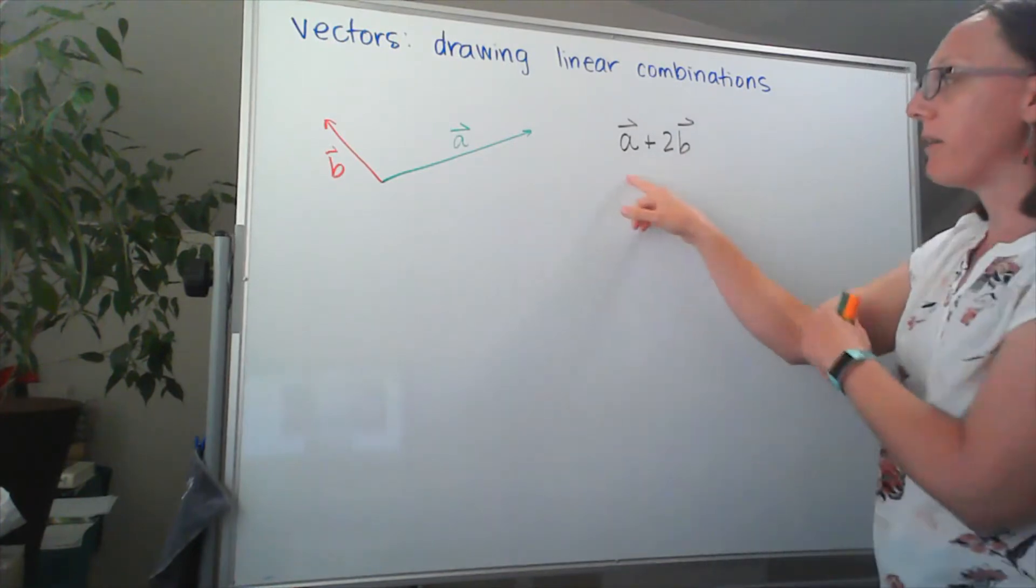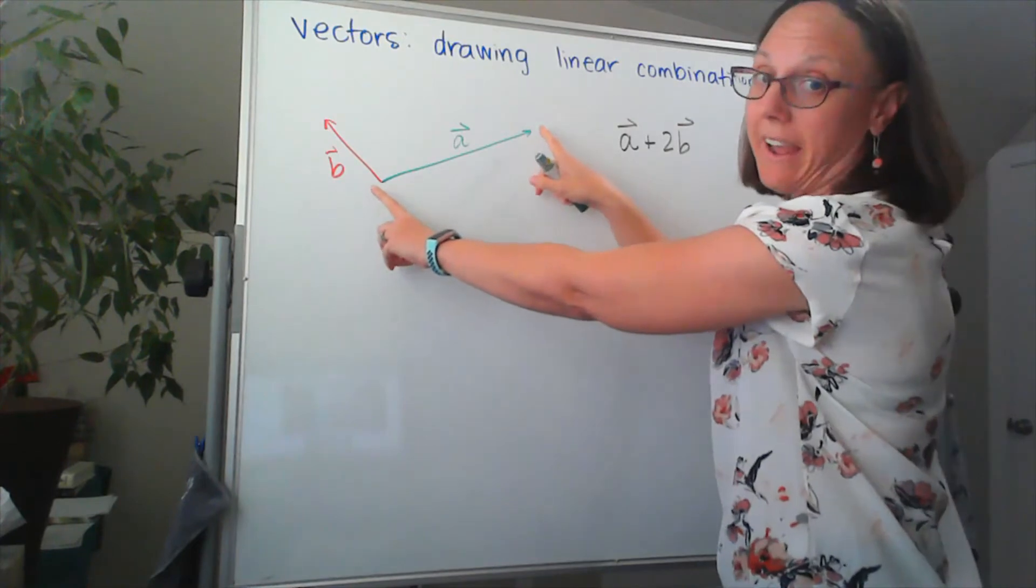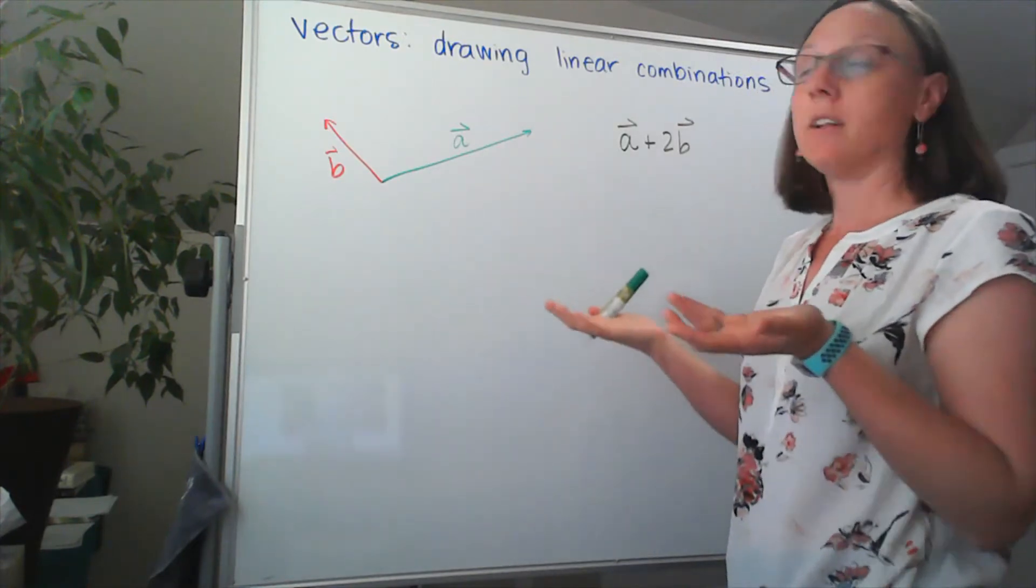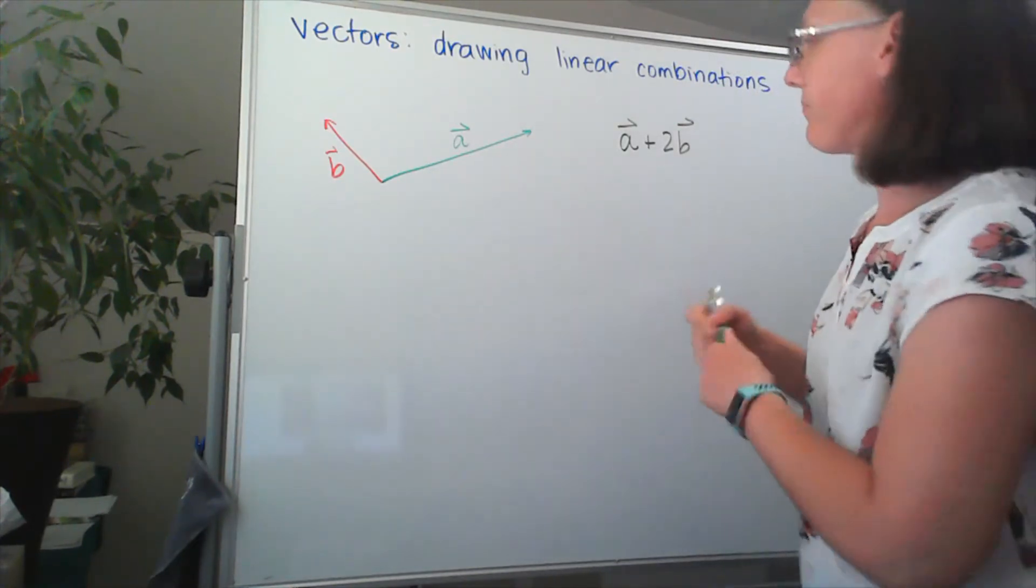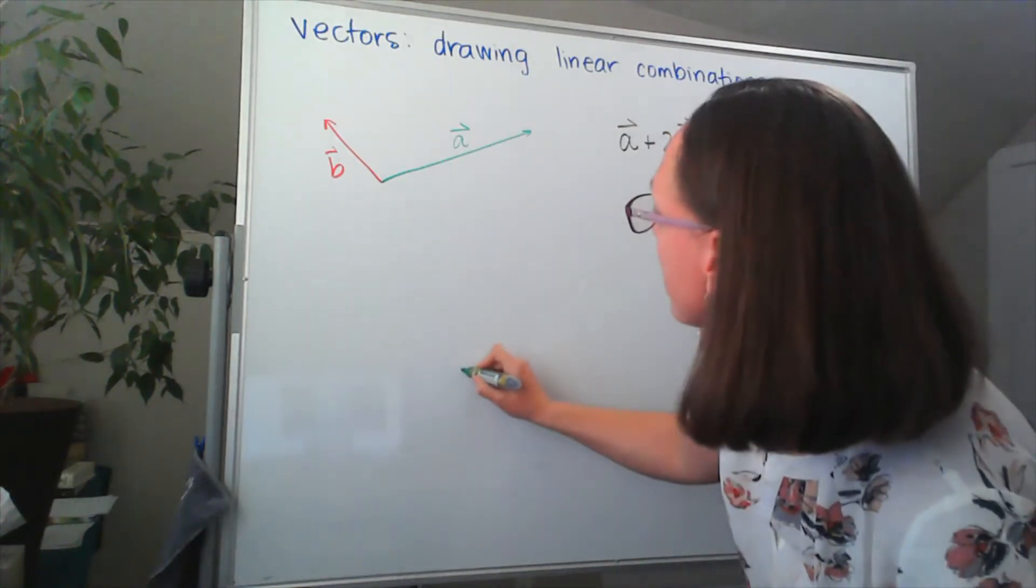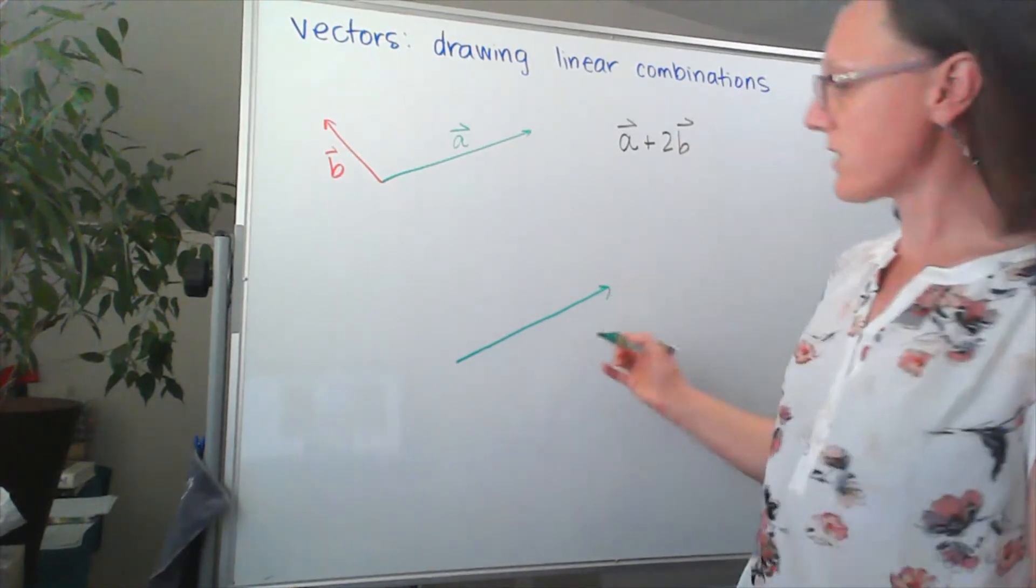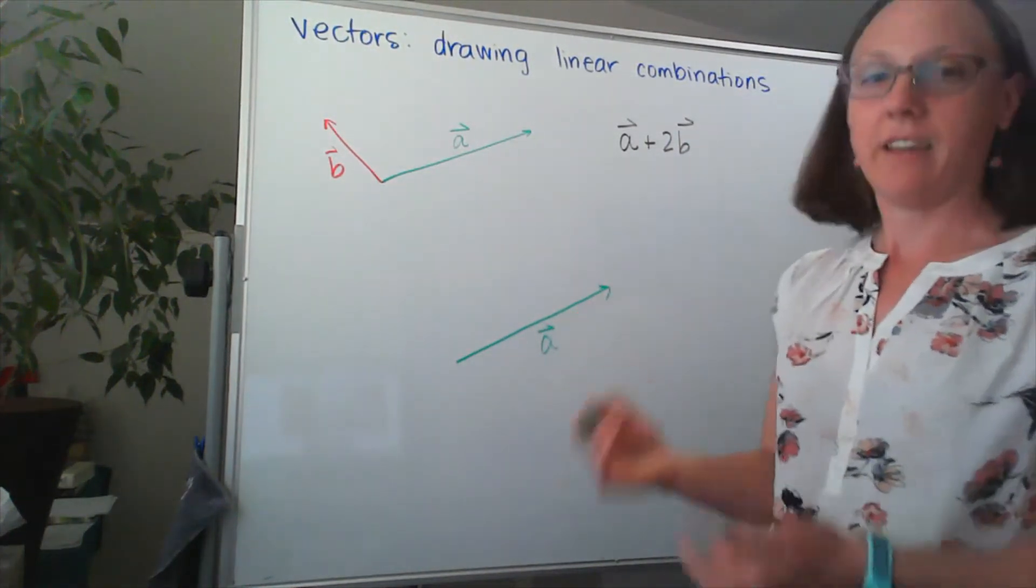So if I think about finding the vector A plus 2B, I'm going to replicate my vector A. So it needs to have that length and direction. So I'm going to try down here, we're going to add that. So let's say that looks like it's about the same length and direction.